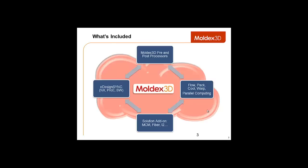Now let's look at what the Moldex 3D cloud system includes. There are pre and post processors, flow, pack, cool, warp analyses, and parallel computing, which allows you to use more than one CPU to run an analysis. The benefit of that being that it would greatly reduce the analysis time because it uses the power of a cluster of computers instead of just one.